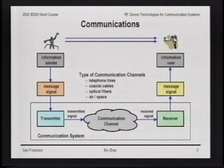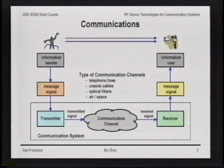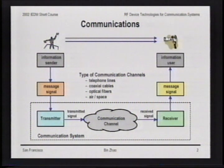Depending on applications, the communication channel can be wireline, wireless, or optical media. The ultimate goal of a communication system is to transfer information from one place to another quickly and efficiently.